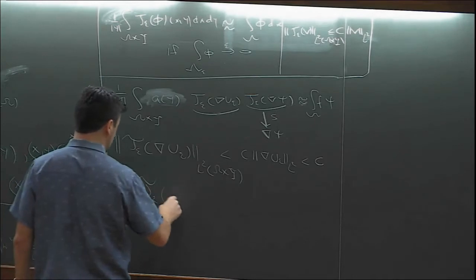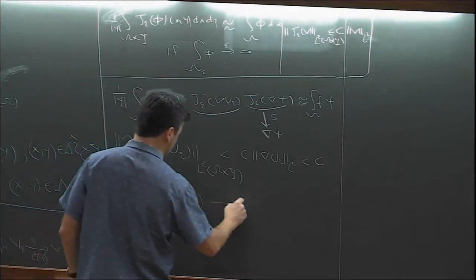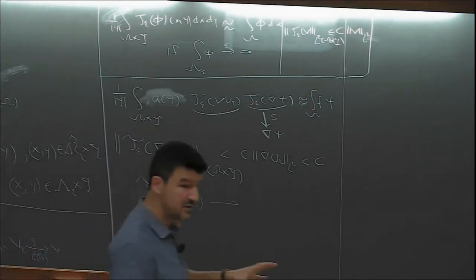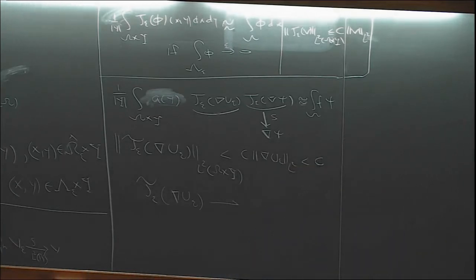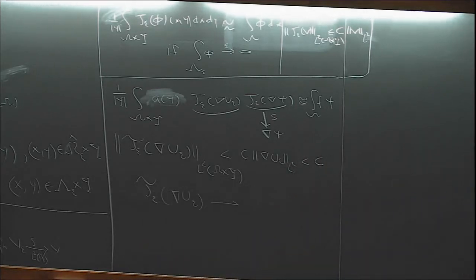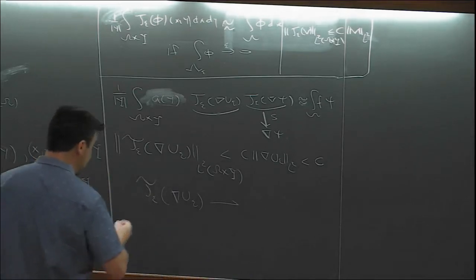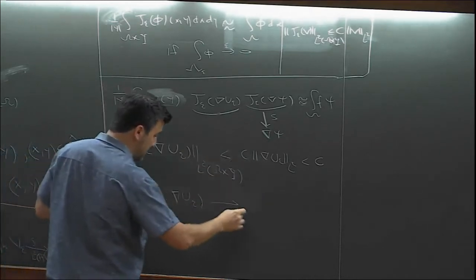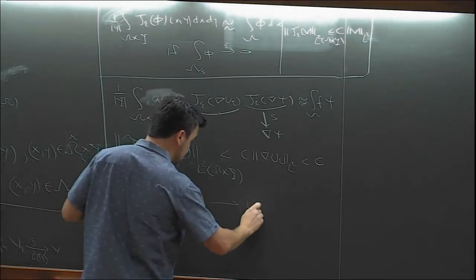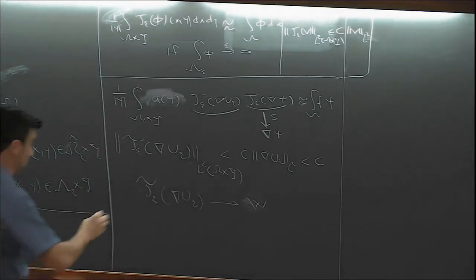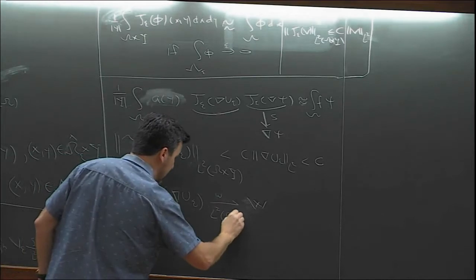Since we have a bounded sequence, compactness will help us extract a weakly convergent subsequence. There will be some weak limit on a subsequence. As Patricia pointed out, passing to the limit on subsequences is fine in homogenization, as long as you get a limit problem with a unique solution. This is the Urysohn lemma argument. Let's call this weak limit w.